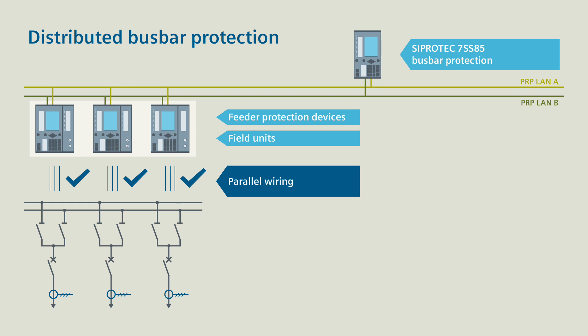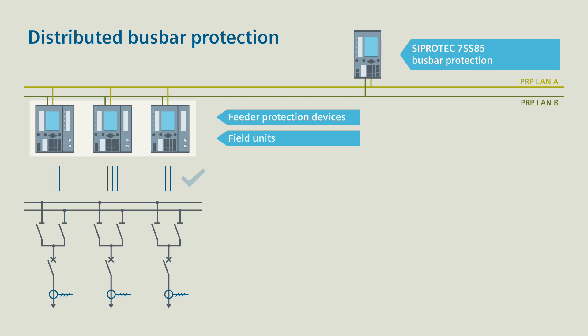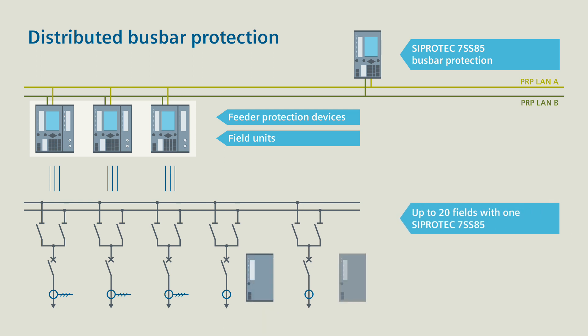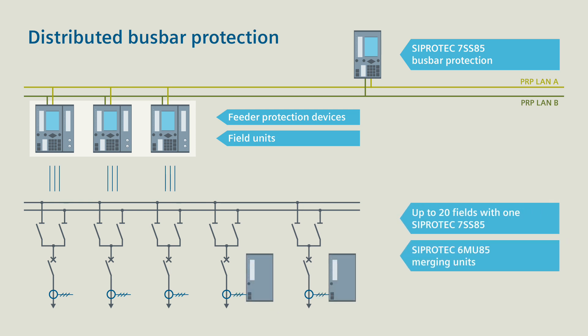The wiring between feeder protection and plant remains unchanged. For future expansions, you use CProtek 6MU85 merging units and so receive additional benefits.